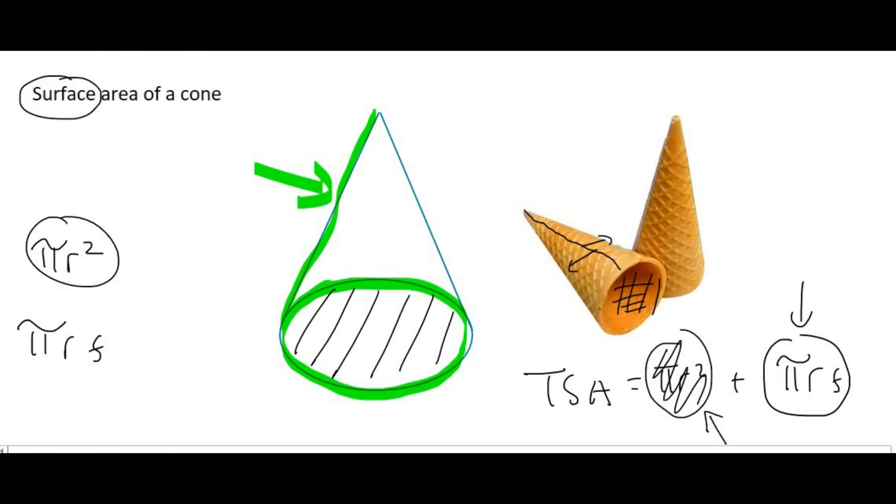If, however, there is a circle at the bottom, then you must use the complete formula, which I'll put over here once more, πr² + πrs.